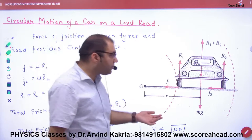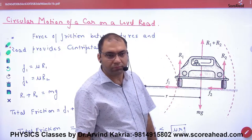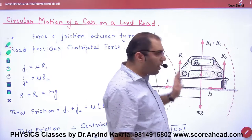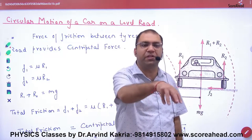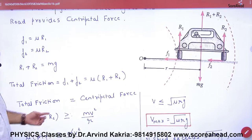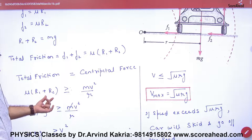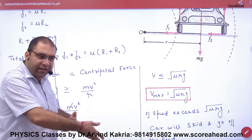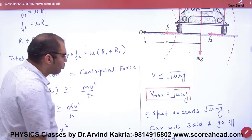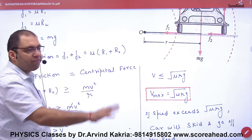Now, because the outer tyre carries more load than the inner tyre, the normal reactions are different: R1 and R2 are different. The outer tyre reaction is more. So if you want to keep the car moving in a circle using friction, the total friction force is F1 + F2 = μ(R1 + R2). For circular motion, the total friction force must be greater than or equal to the centripetal force mv²/r.